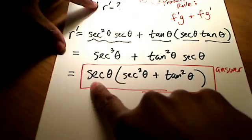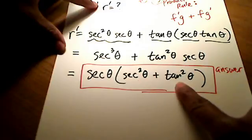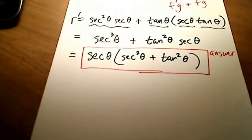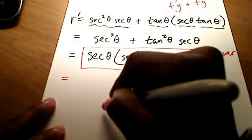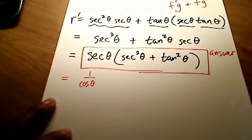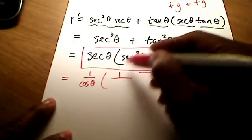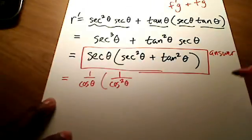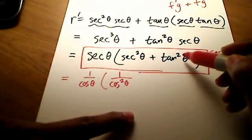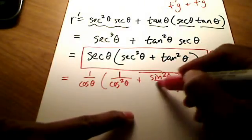You should remember that secant is simply the reciprocal of cosine, and tangent is really the ratio of sine over cosine. So instead of writing secant theta out front, we can write it as one over cosine theta. And instead of writing secant squared theta, we write it as one over cosine squared theta — it's just the reciprocal. And tangent squared theta is simply the ratio of sine squared over cosine squared.